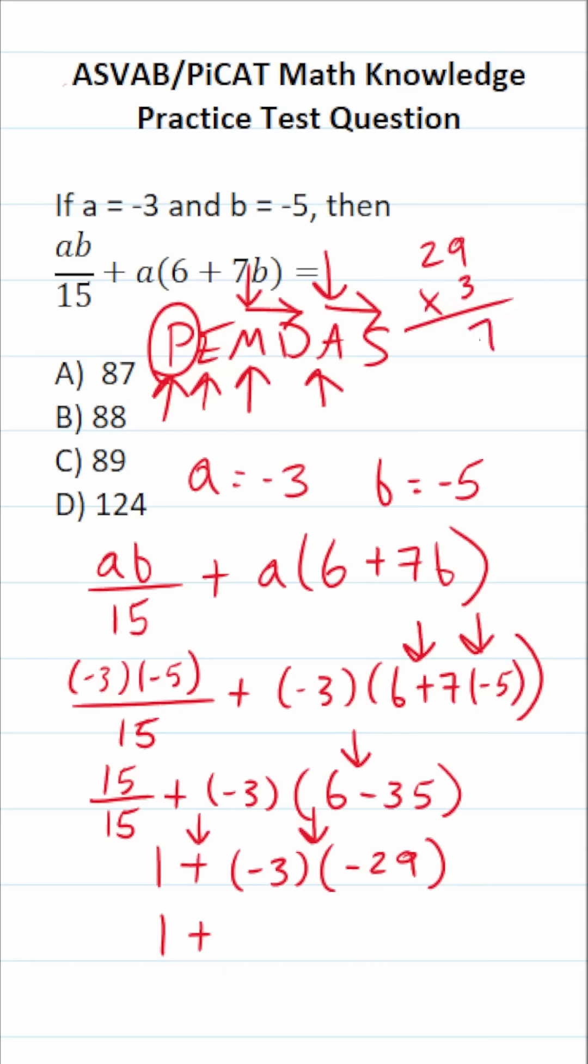9 times 3 is 27. Bring down a 7, carry a 2. 2 times 3 is 6, 7, 8. So this becomes 87 plus 1. 87 plus 1 is 88. So the answer to this one is B, 88.